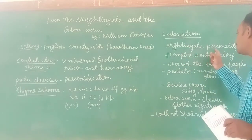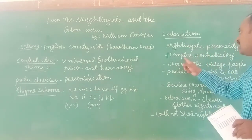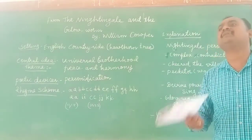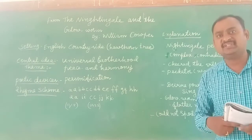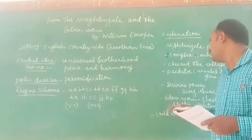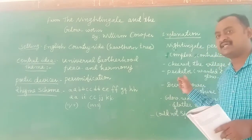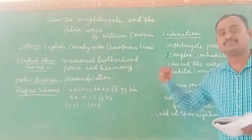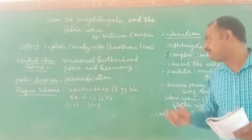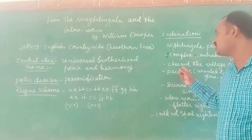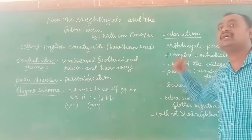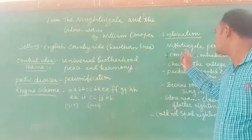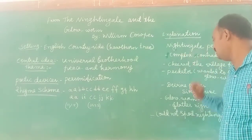In this explanation, if you observe, the nightingale's personality is very complex. In the first part, the nightingale is admiring and cheering the people with its beautiful song. But in the next part, it acts as a predator — it thought to kill one animal as its prey, the glow-worm. So, the nightingale's personality is very complex: first it is cheering the people; second, it thought to kill another animal as its prey.